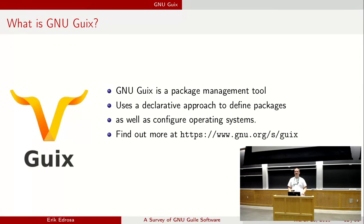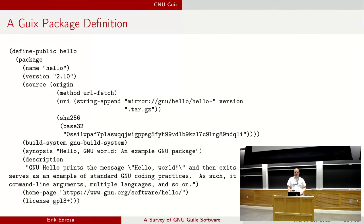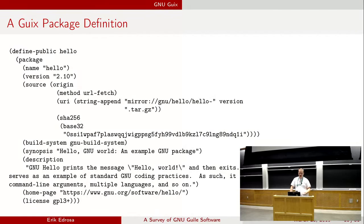Now let's actually get to some software that uses GNU Guile. The first one is GNU Guix. GNU Guix is a package management tool that uses a functional approach to help create reproducible builds. It uses a declarative approach to define packages, as well as a configuration to configure operating systems. Here's an example of a Guix package for the GNU Hello package. As you can see, there's a DSL where you give the name, the version, where to find the actual source code, and what build system to use — in this case the GNU build system.